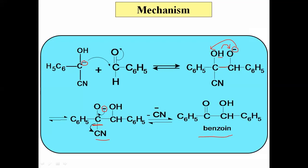This concludes the second topic from organic chemistry — aldehydes and ketones — which is a very important topic. In the introduction, we studied what is meant by aldehydes and ketones, nomenclature, and the structure of the carbonyl group. We discussed the hybridization of the central carbon, its geometry, how it forms sigma bonds and pi bonds, and the reactivity. The C=O bond is a polar bond and hence is highly reactive.